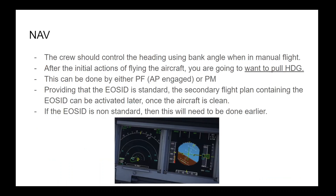The Nav part is just as important. The crew should control heading using bank angle when in manual flight. After the initial actions of flying the aircraft, you will want to pull heading. This can be done by either the PF with autopilot engaged or the PM, provided the engine out SID is standard. The secondary flight plan containing the engine out SID can be activated later once the aircraft is clean. If the engine out SID is non-standard, this will need to be done earlier.